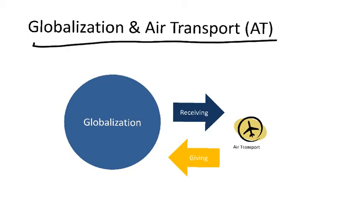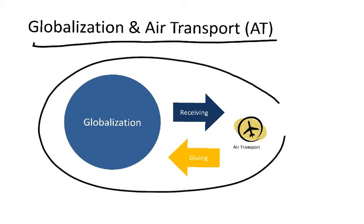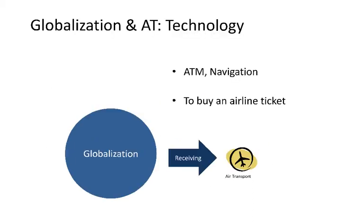If we look at the relationship between globalization and air transport, we see that they are giving and receiving from each other. For instance, air transport is receiving technology from the globalization process, which is used to improve air traffic management systems and navigation systems in aircraft. This technology is also used to develop tools and booking engines which allow you to book airline tickets from your home.